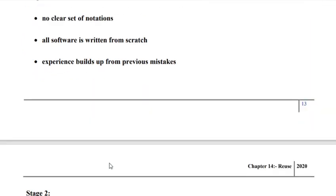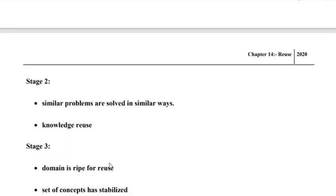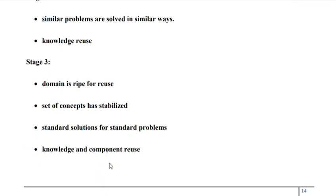In stage 2, similar knowledge is used for building similar systems, or similar problems are solved in a similar way. So here what we are trying to do is enforce reuse of knowledge. In stage 3, we have a domain ripe for reuse — we are placing reusable components into the domain. So the domain is ripe for reuse. What we have is a set of concepts that are stabilized, standard solutions for standard problems, and here we are reusing knowledge as well as reusing the components.